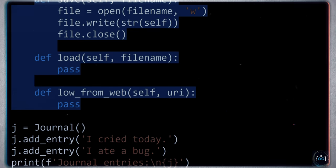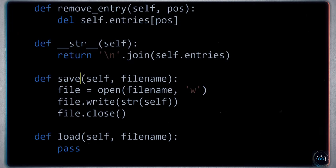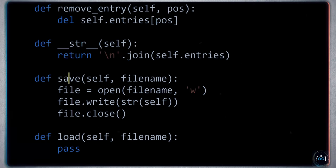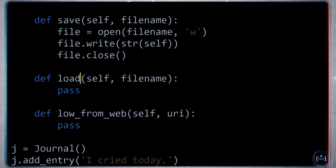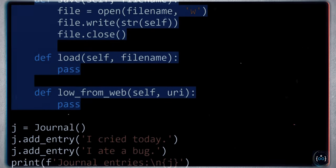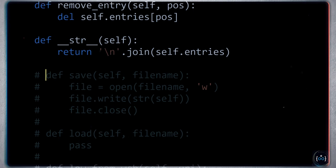Think about a complete application where, in addition to journals, you also have other different types. All of those types might have their own save, load, and load_from_web methods. This functionality might have to be centrally changed at some point — for example, adding code to check whether you're allowed to write to a particular directory. If you adopt this approach, you'll have to go into every single class and change their save and load methods, which is particularly tedious. So you want to take the responsibility of persistence and put it in a separate class.